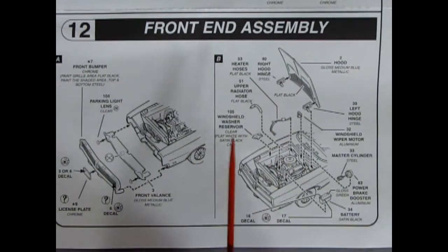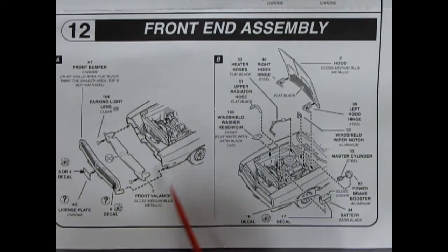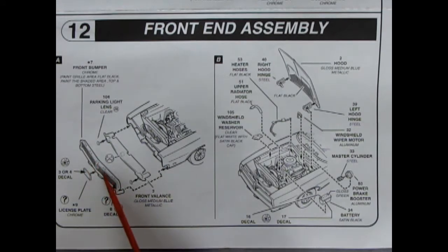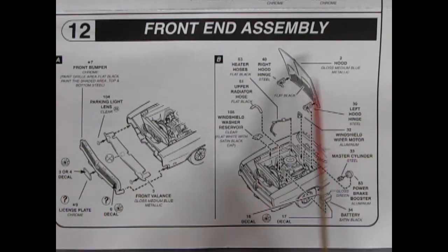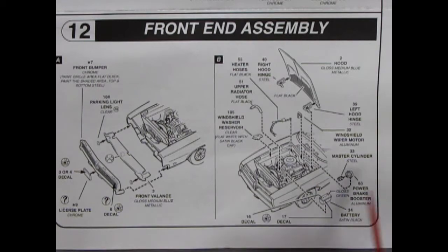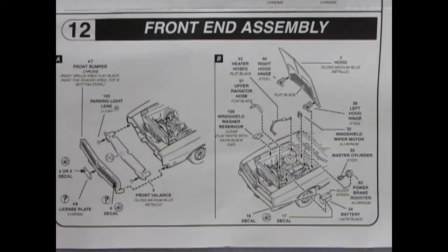Panel twelve takes us to our front end assembly and here you get your front valence going underneath as well as your grille going in there and then the license plate with your choice of license plate decals. Then we've got our hood with hood hinges, all the little hoses for the heater and radiator and windshield wiper reservoirs going in as well. Power brake boosters, batteries, the whole deal pops underneath your hood.